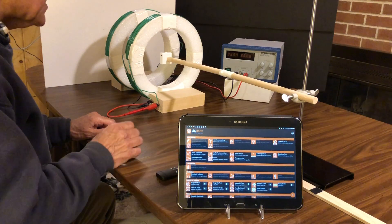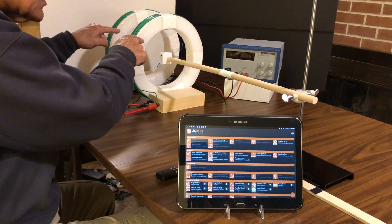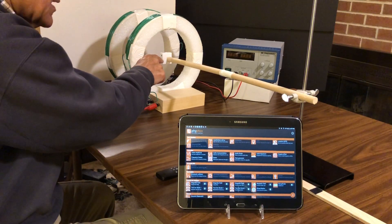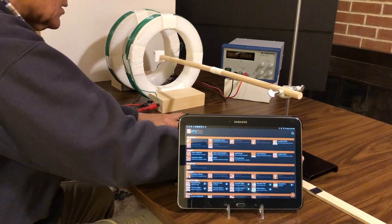In this experiment we will be investigating the magnetic field along the axis of a pair of Helmholtz coils. PocketLab Voyager has been connected to the end of a long dowel rod which can move back and forth along the axis.